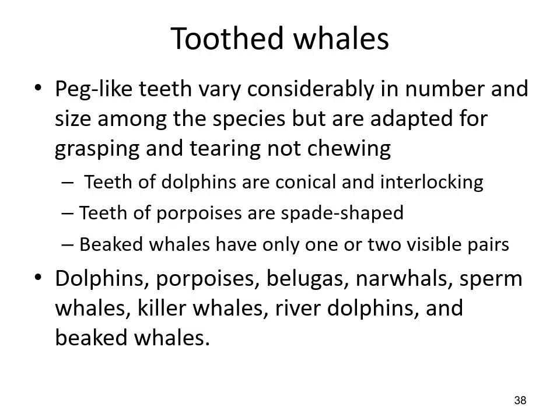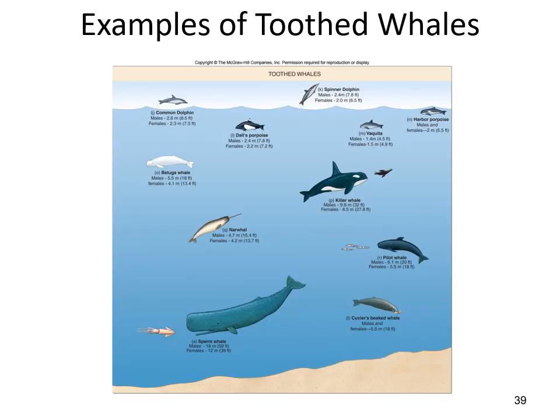Toothed whales, or odontocetes, do not have different types of teeth — all teeth are the same, called homodonts — small, peg-like teeth adapted for grasping and tearing. They generally swallow things in pieces rather than chewing. Dolphin teeth are cone-shaped and interlocking; porpoise teeth are spade-shaped. Beaked whales have only one or two visible pairs that stick out. The different odontocetes include dolphins, porpoises, belugas, narwhals, sperm whales, killer whales, and river dolphins. The sperm whale can make the largest sound of any living thing and may use sound to stun its prey.